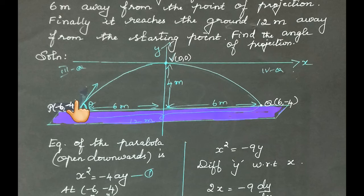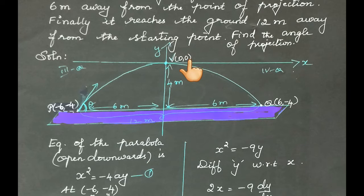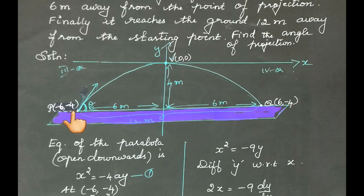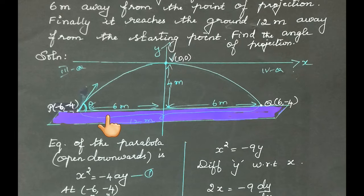Since it is a parabola, we place the vertex at the origin (0, 0). We draw the x-axis and y-axis. The parabolic path opens downward. The point of projection lies in the third quadrant. The horizontal distance is 6, so the x-coordinate is minus 6, and the height is 4, so the y-coordinate is minus 4. Therefore, the point of projection is (−6, −4).